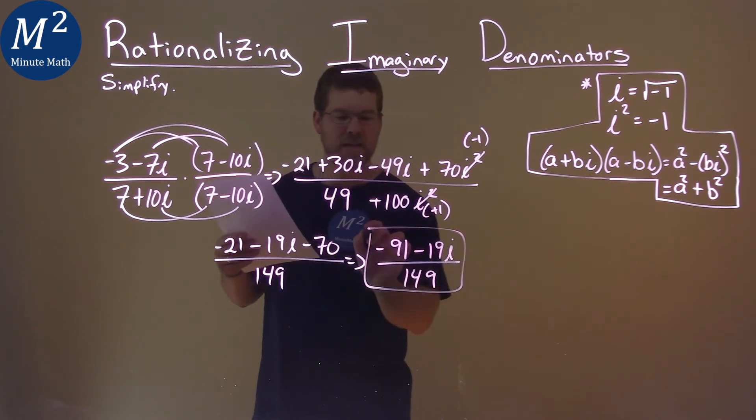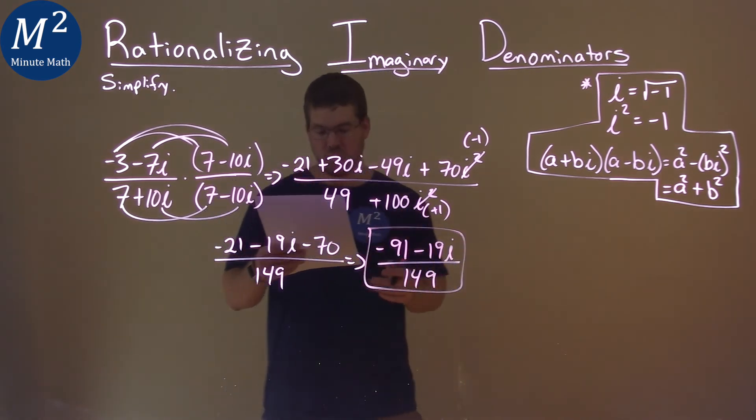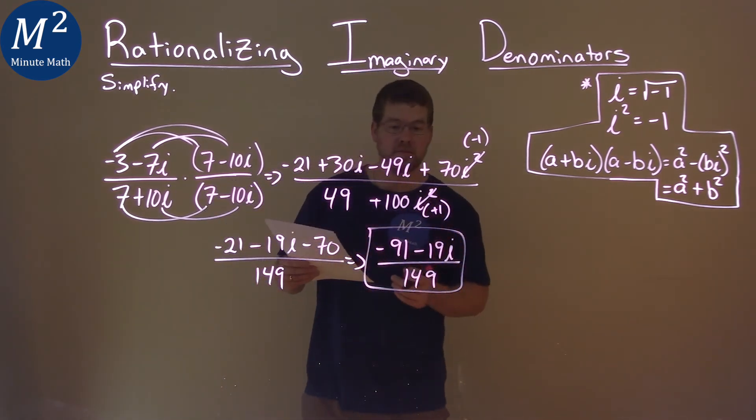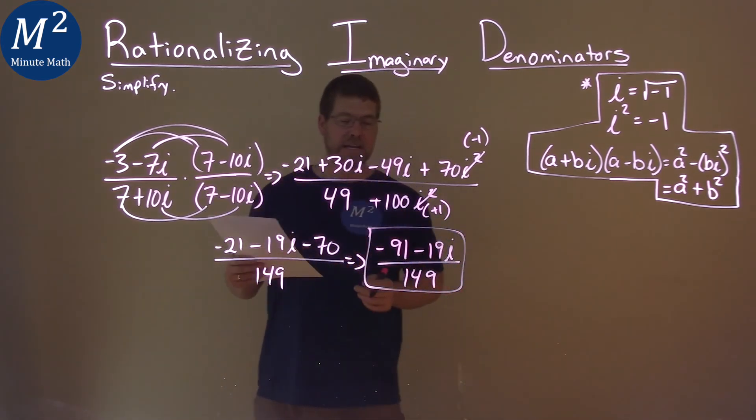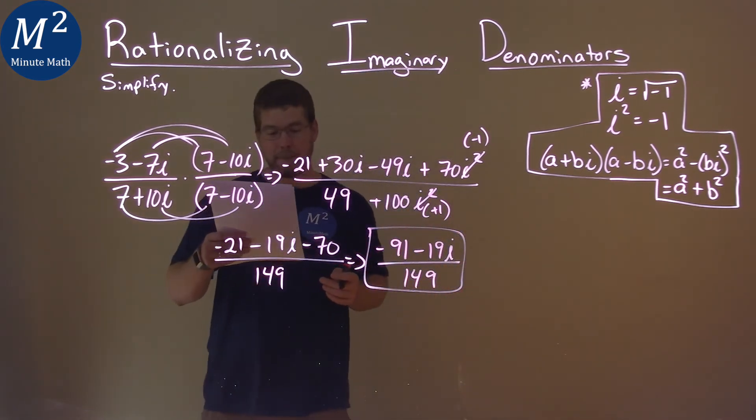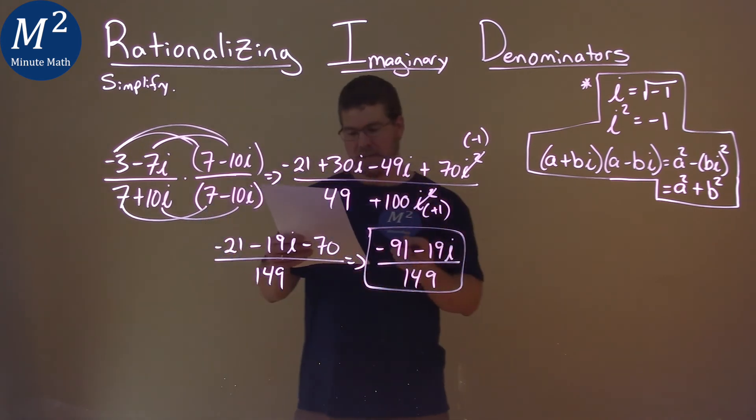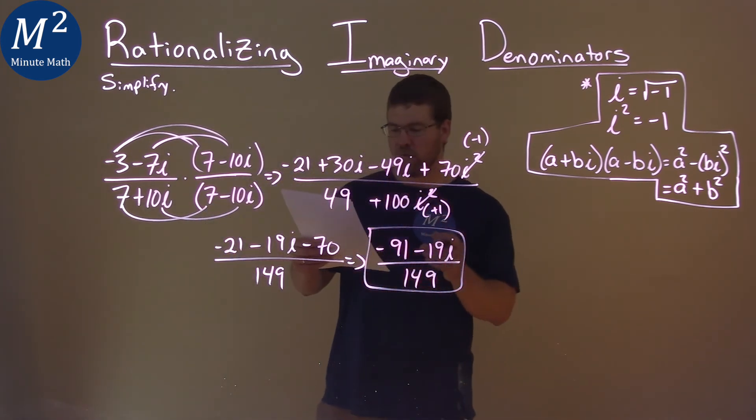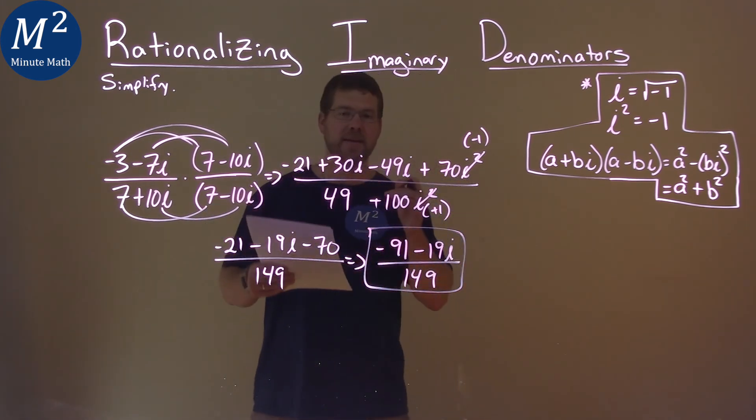So actually, now we have our final answer: negative 91 minus 19i over 149.